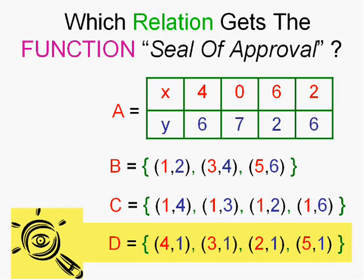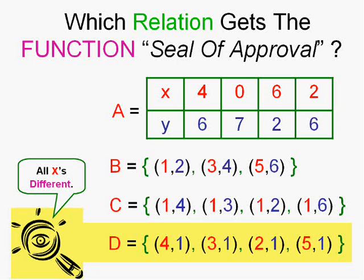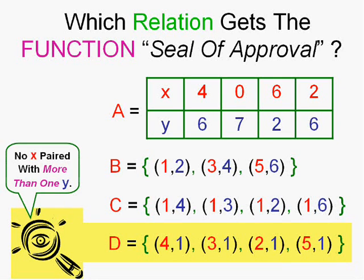Finally, D, this is a little bit confusing. D is a relation that has all the x's are different, 4, 3, 2, and 5. They're all different. Now, they all get mapped to the same number, but no one gets mapped to more than one y.